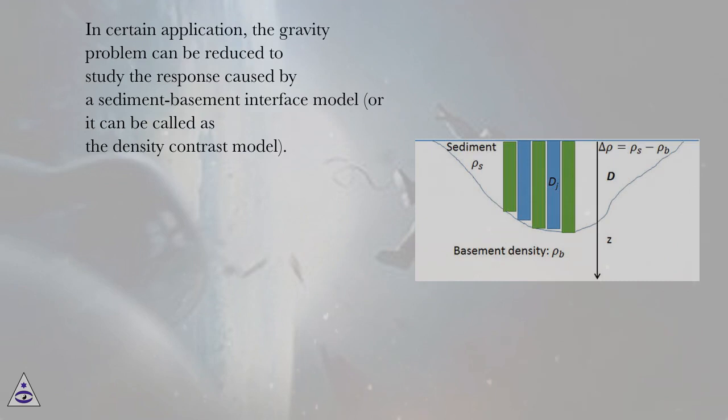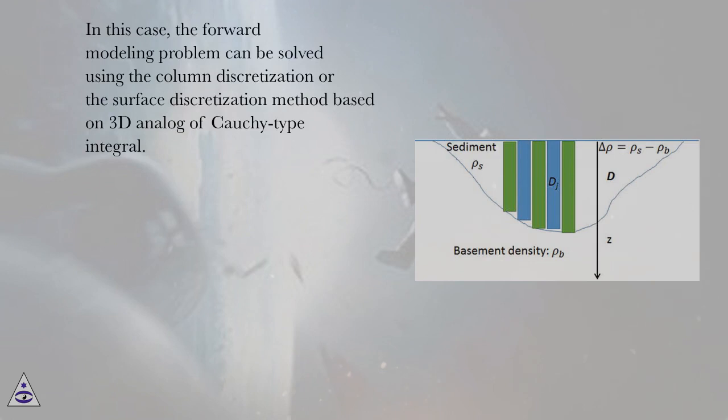In certain application, the gravity problem can be reduced to study the response caused by a sediment-basement interface model, or it can be called as the density-contrast model. In this case, the forward modeling problem can be solved using the column discretization or the surface discretization method based on 3D analog of Cauchy type integral.